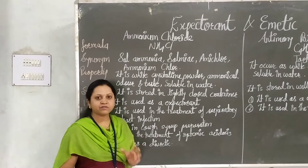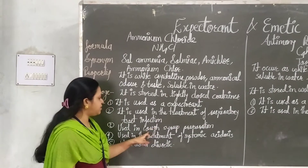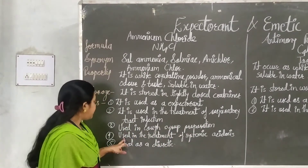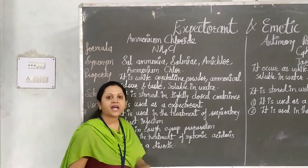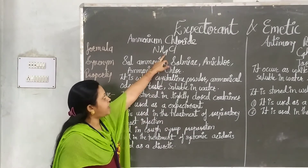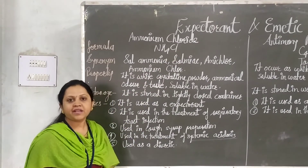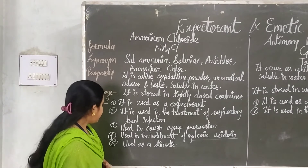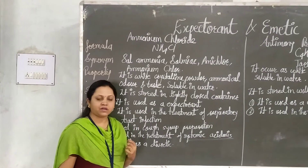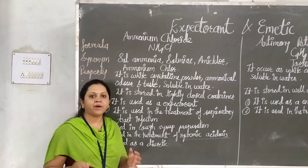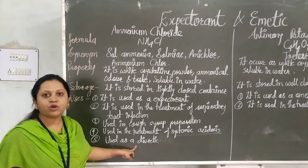Next, it is used in the treatment of systemic acidosis. Systemic acidosis means if the whole system is acidified, then an alkaline agent is needed — because of the ammonia and because of the chloride, which is a salt. So it is also used in the treatment of systemic alkalosis. Next, it is used as a diuretic. Diuretic means the salt draws in a maximum quantity of water, forming a bulk, so the rate of urination will be increased.